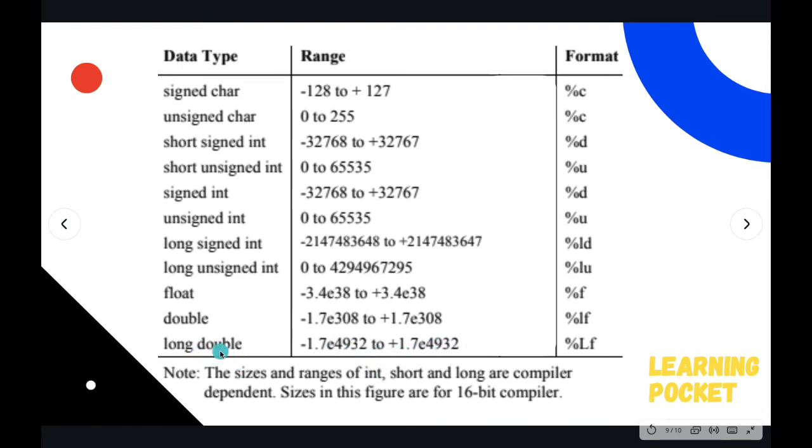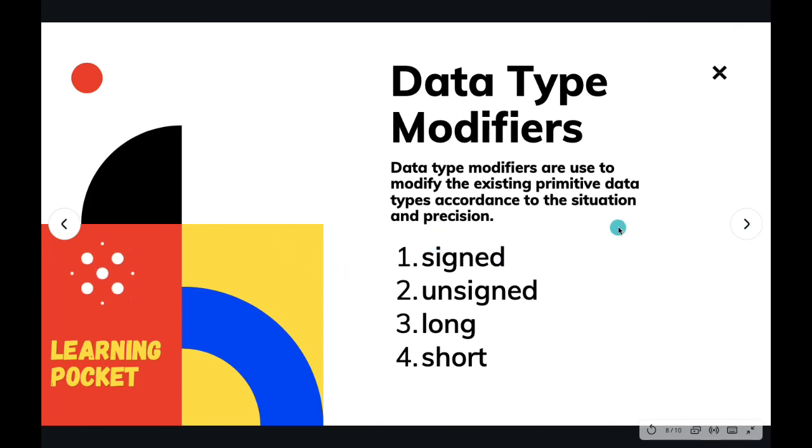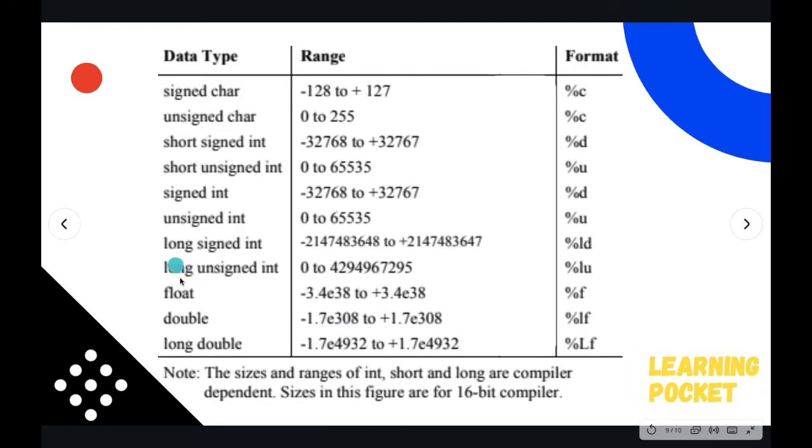Instead of that, we use double, and we have long double with its range even more than the double. So let's recapitulate. The signed is the normal signed, and unsigned will truncate the negative portion, negative range, and double the positive range. In case of long, it simply increases. If you are going to use unsigned long, it is just going to increase the range and also double the range and truncate the negative portion. You can see it here itself. These are the data type modifiers associated with it.